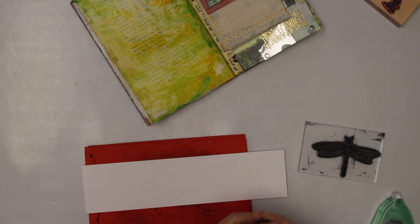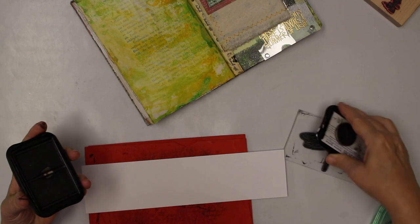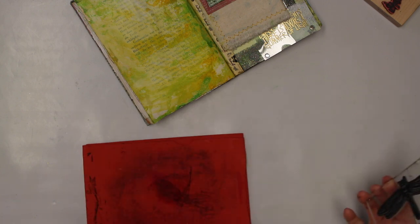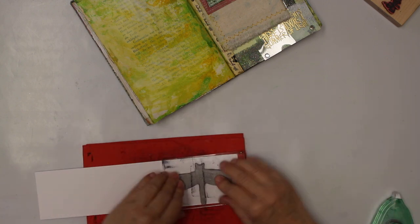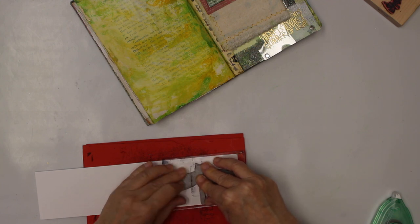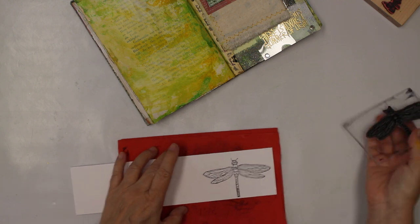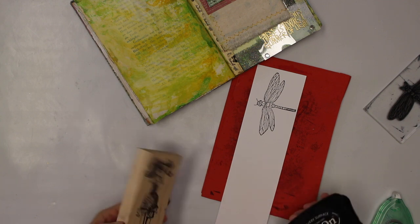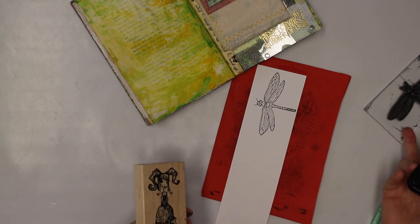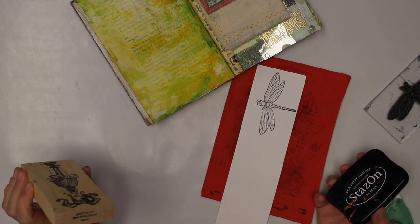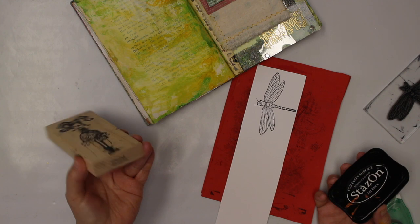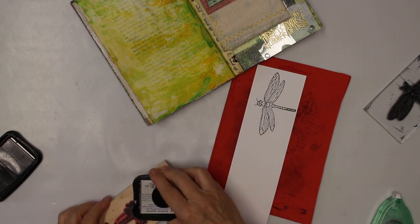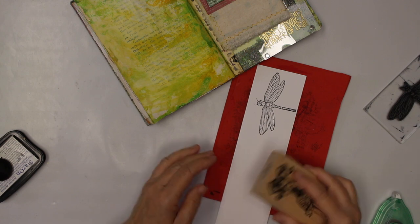I'm gonna stamp first my dragon. I gonna use StazOn black ink, any permanent ink would work. Okay, that's what I happen to have. Okay, and next I only need the head of her. I have no idea what kind of stamp this dragonfly is but this is from the stamp boutique. It's from Daniel Torrente. I like those girls. But I only need the head this time. Let's see how we can do that.